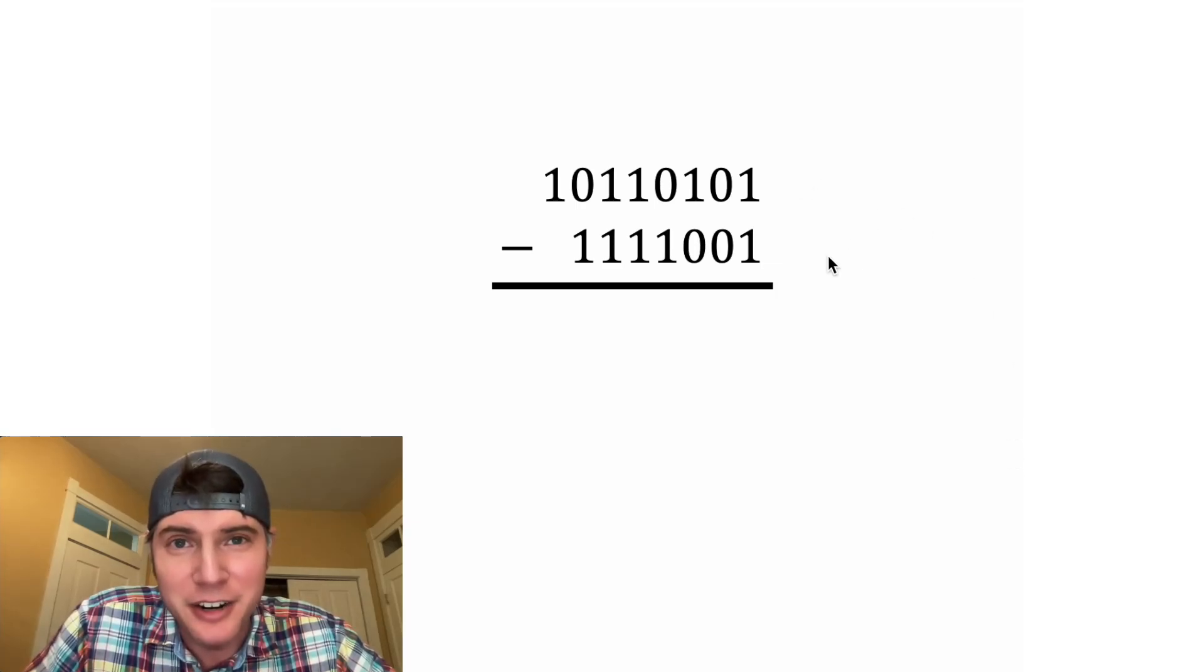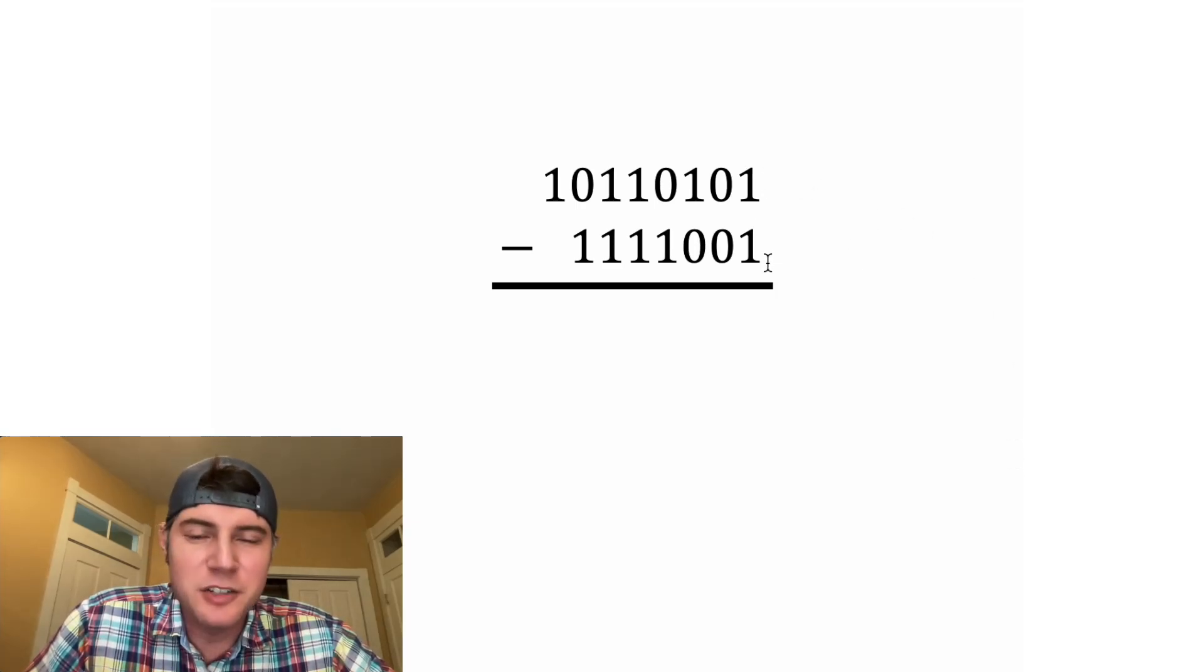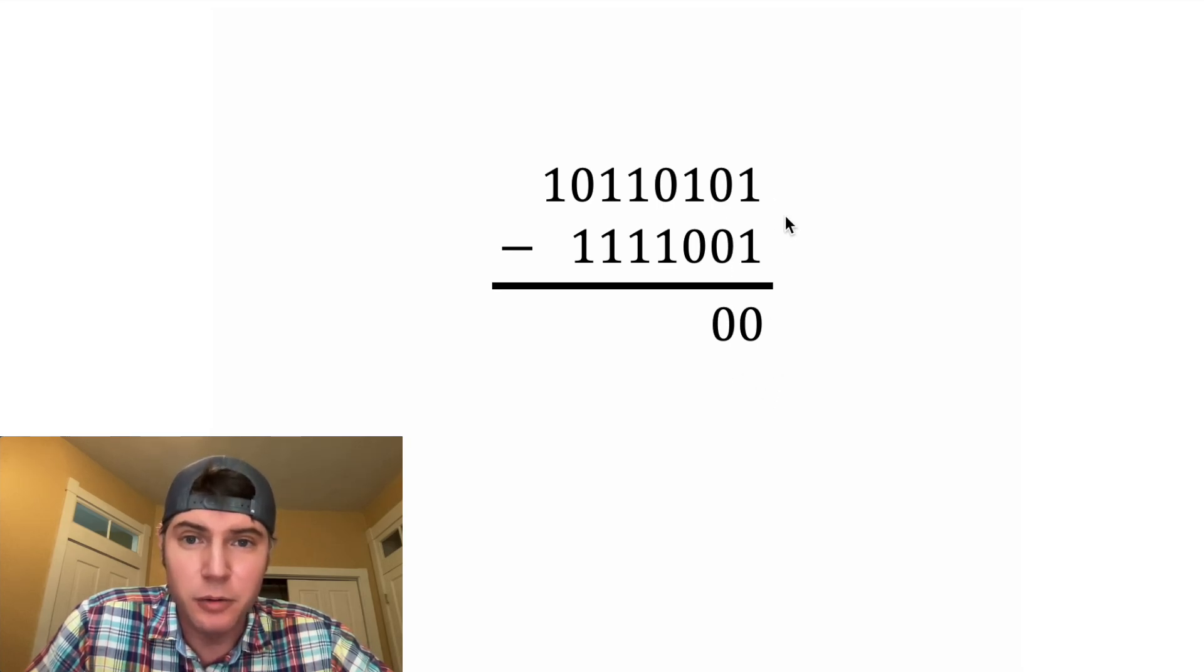Hey guys, let's subtract two numbers that are in binary notation. So we do 1 minus 1, which gives us 0, 0 minus 0, which gives us 0, 1 minus 0, which gives us 1.